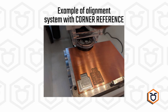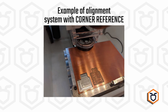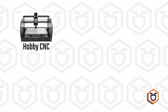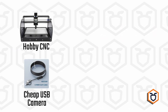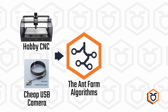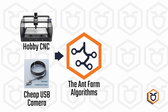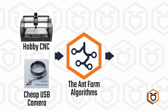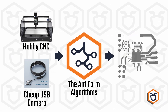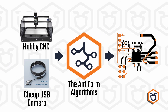In general, using precise mechanical references means having an expensive system. The idea behind our solution is to take advantage of the software capabilities to detect and correct the misalignment errors as much as possible. And in this sense, our procedure aims to make it simpler to align the bottom side of the board with a few clicks.